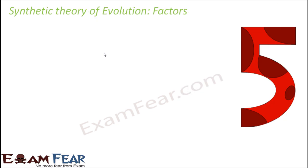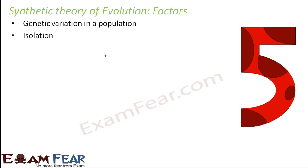This synthetic theory of evolution includes the following five factors: genetic variation in a population, isolation, heredity, natural selection, and speciation. Now let us discuss each of these factors in more detail.